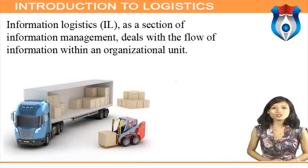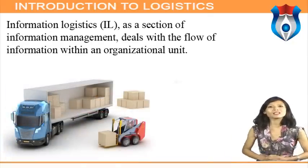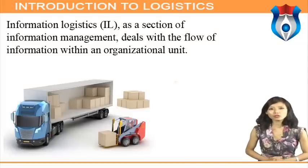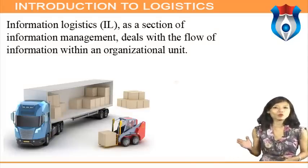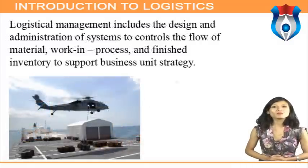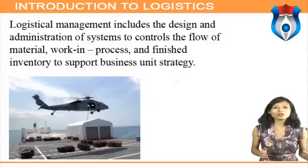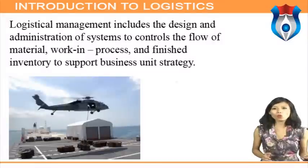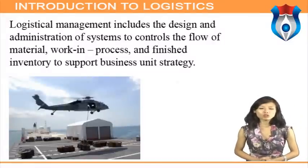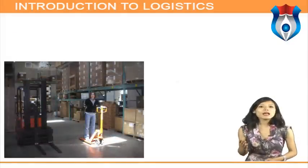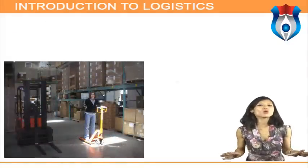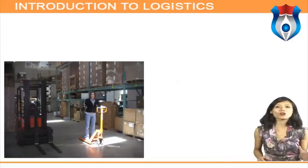Information logistics, as a section of information management, deals with the flow of information within an organizational unit or between any number of organizations that form a value-creating network. Logistical management includes the design and administration of systems to control the flow of material, work in process, and finished inventory to support business unit strategy. Logistics is the designing and managing of a system to control the flow of material throughout a corporation — a very important part of an international company because of geographical barriers.